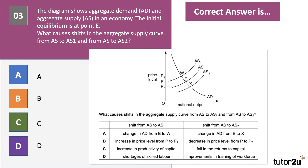Question three — a good recent past paper question. The diagram shows aggregate demand and supply in an economy. The initial macroeconomic equilibrium is at point E. The question asks: what causes the shifts in the aggregate supply curve from AS to AS1 and from AS to AS2? Press pause and have a go. We're looking for two shifts: AS1 is an inward shift, AS2 is an outward shift.